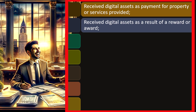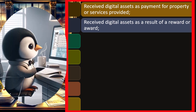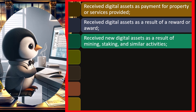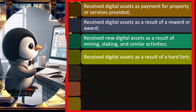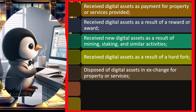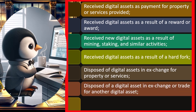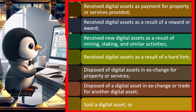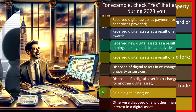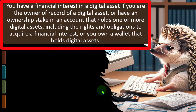Also check 'yes' if you received digital assets as a result of a reward or award, received new digital assets as a result of mining, staking, and similar activities, received digital assets as a result of a hard fork, disposed of digital assets in exchange for property or services (which would likely go on Schedule D as a sale price minus cost — similar to selling stocks), or disposed of digital assets in exchange or trade for another digital asset, since trading one digital asset for another can still trigger a tax implication.